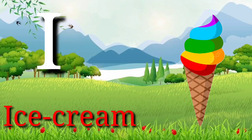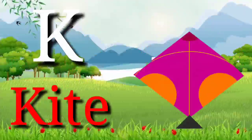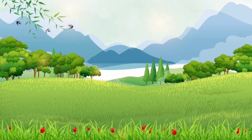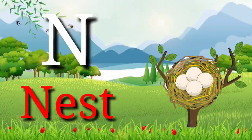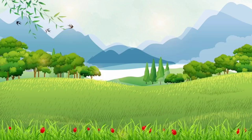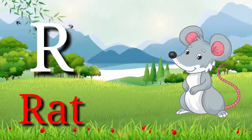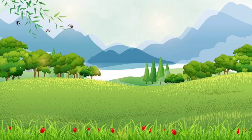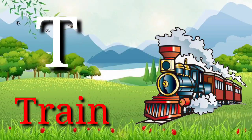I for ice cream, J for jug, K for kite, L for lion, M for mango, N for nest, O for owl, P for parrot, Q for queen, R for ring, S for ship, T for train.